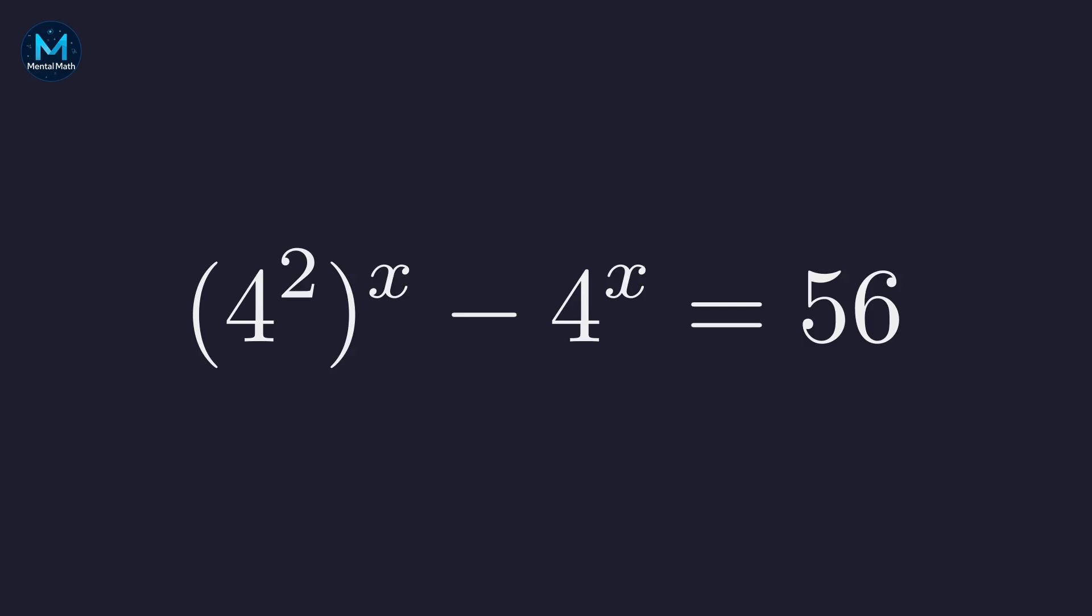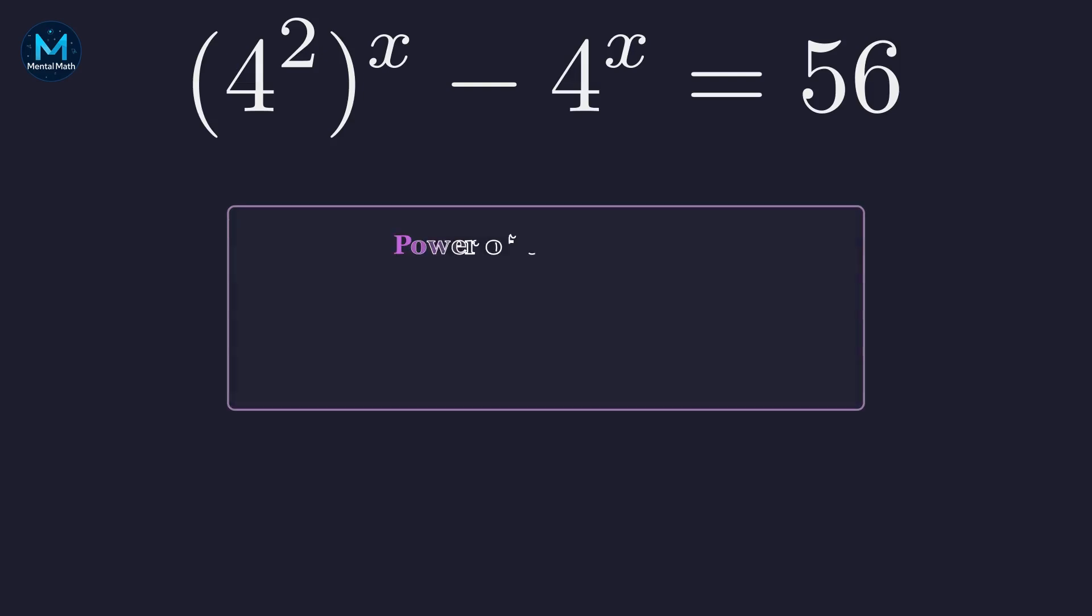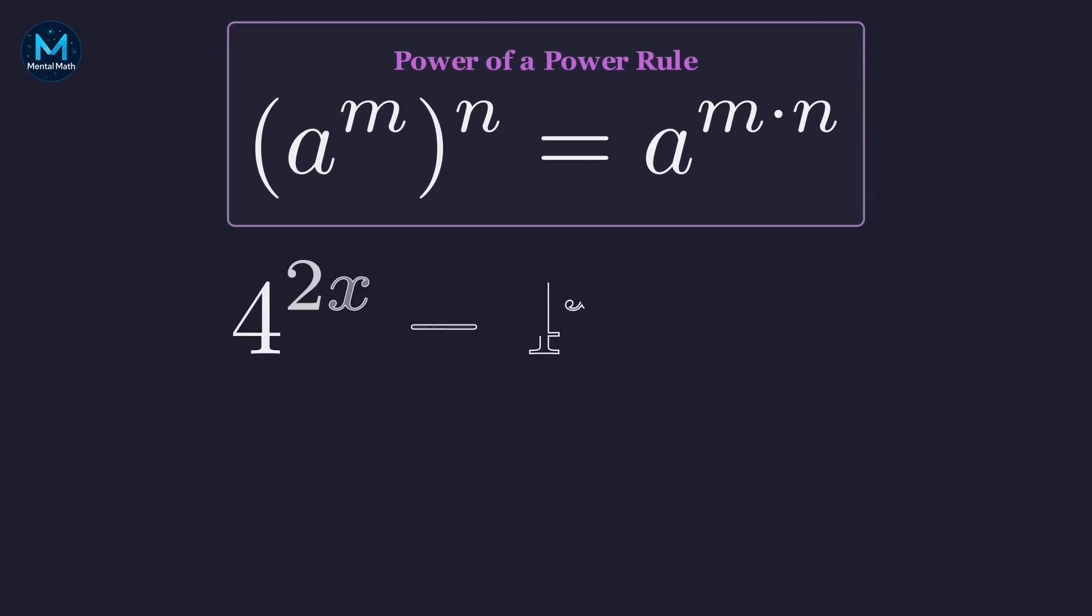So we can rewrite the first term as 4 squared, all raised to the power of x. When we have a power raised to another power, we multiply the exponents. So we multiply 2 and x, giving us 4 to the power of 2x.